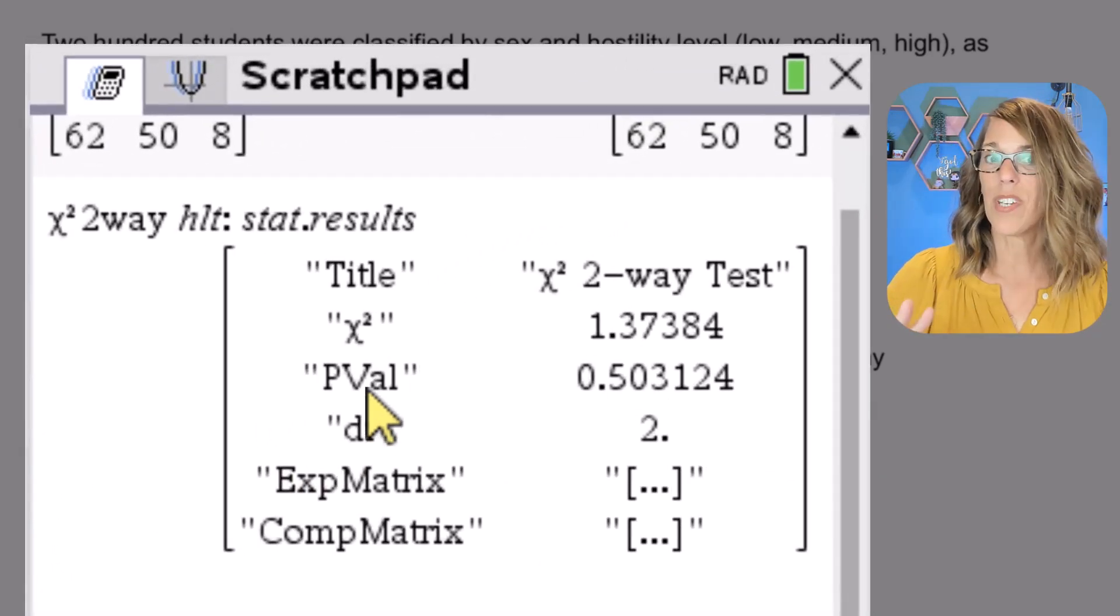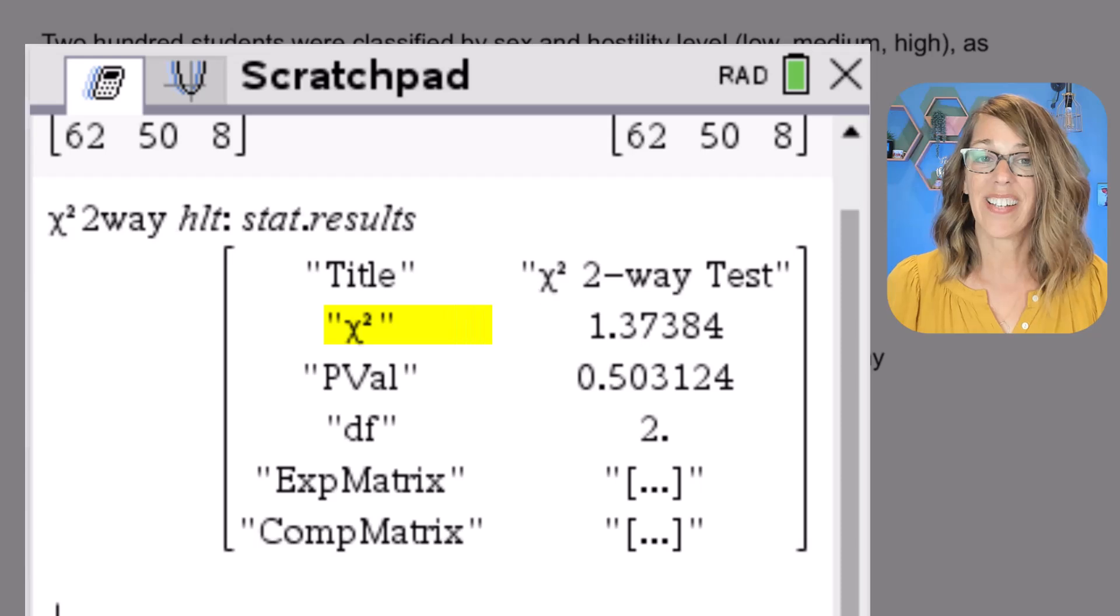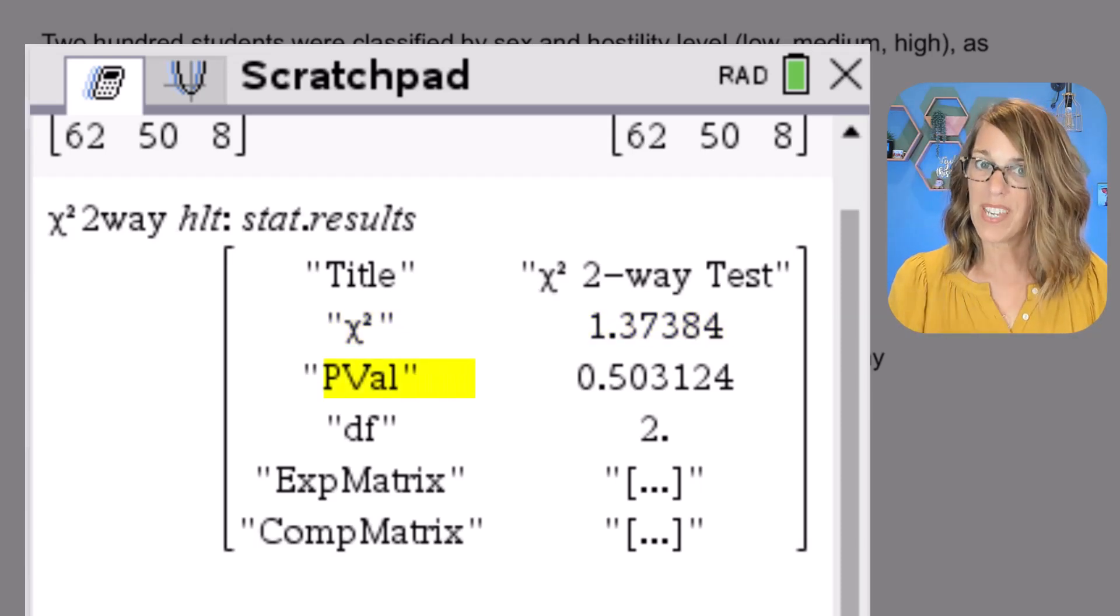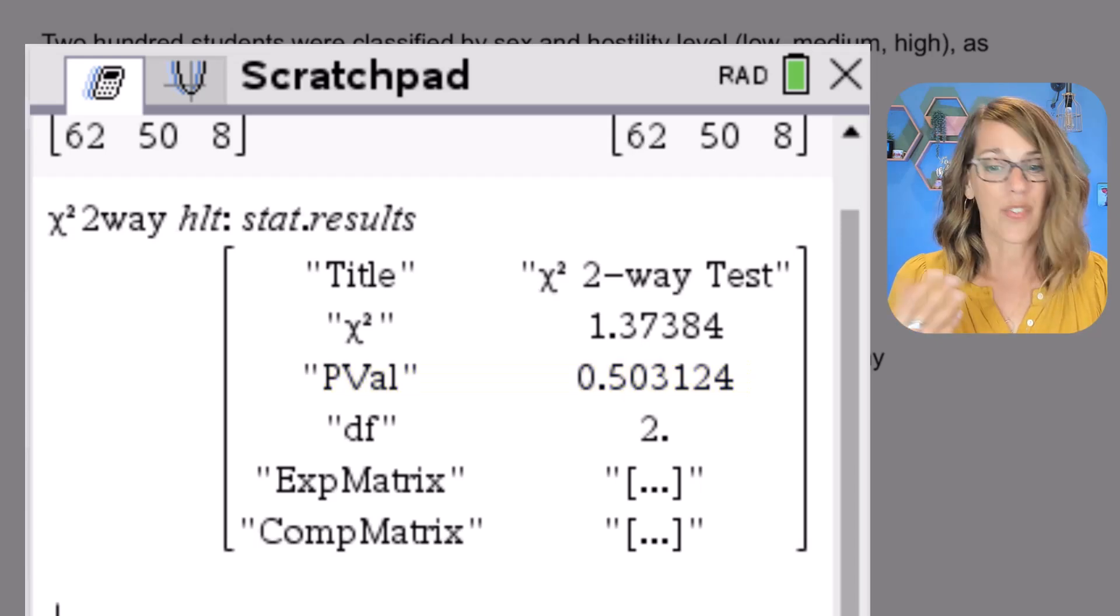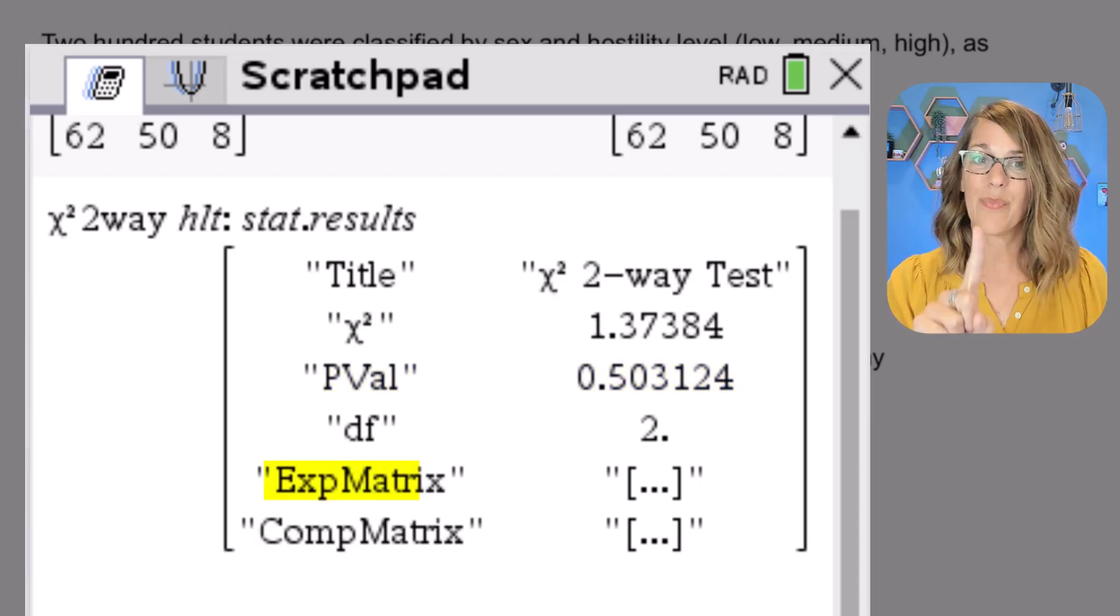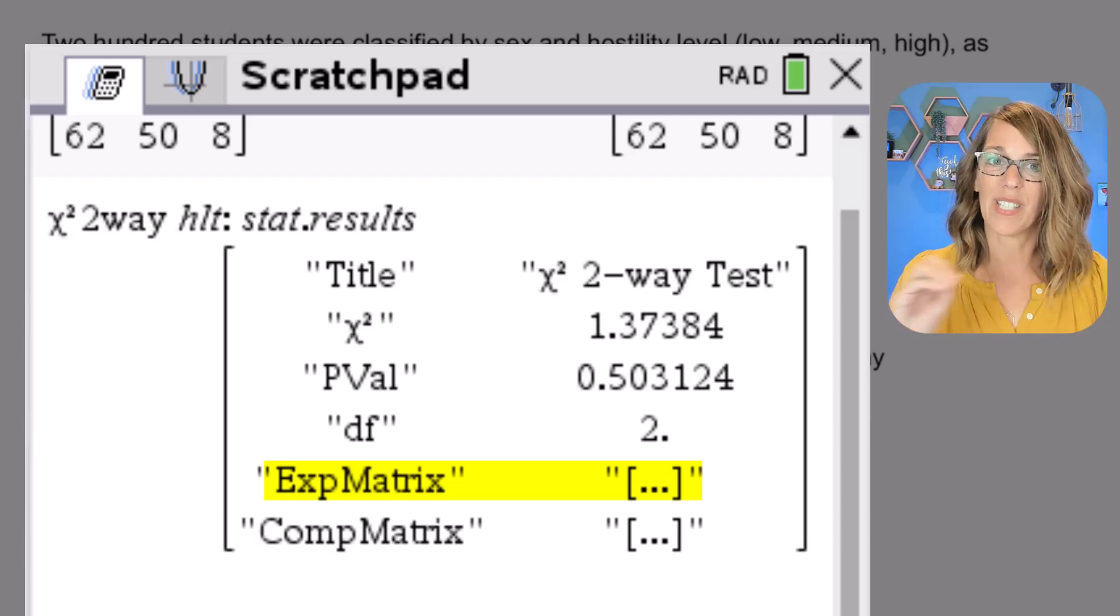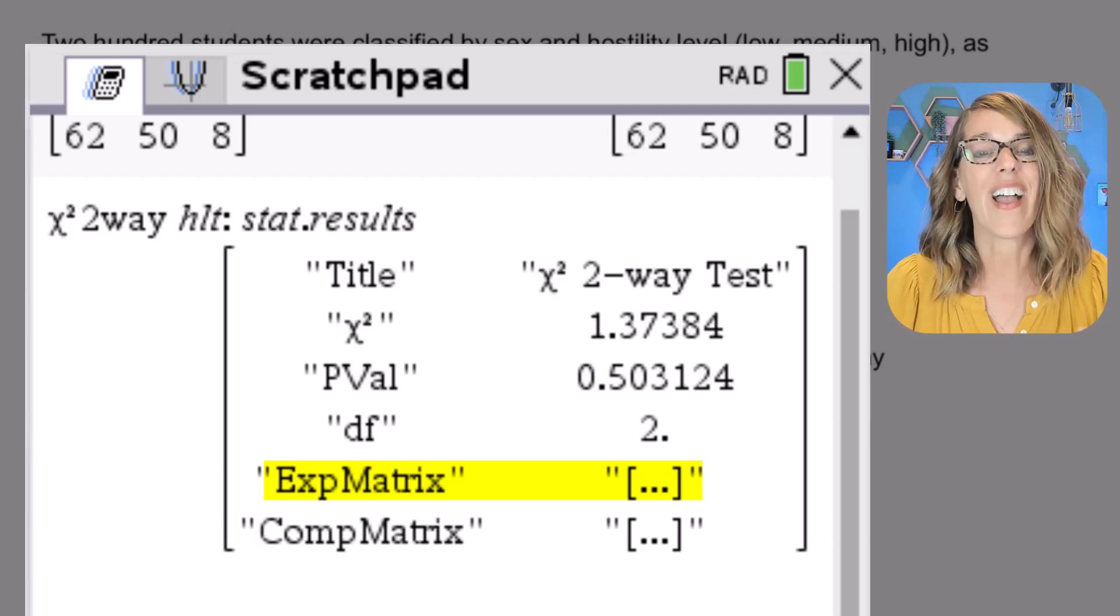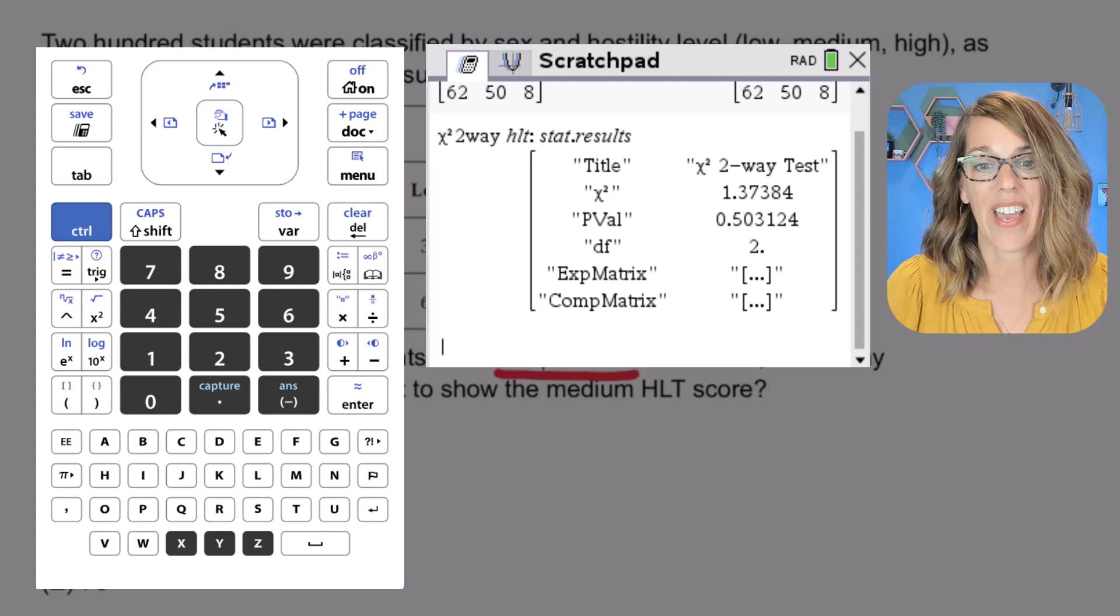Now the test gives me some really great information. It gives me that test chi-square value, which I could compare to a critical value. It also gives me the p-value and that p-value is a fairly large p-value, degrees of freedom. And then this is what I'm looking for. It gives me that expected matrix, but it doesn't show it to me here. I need to go and retrieve that.